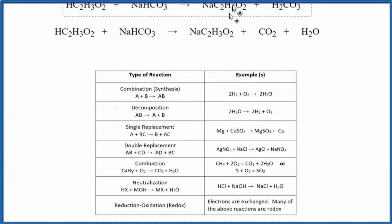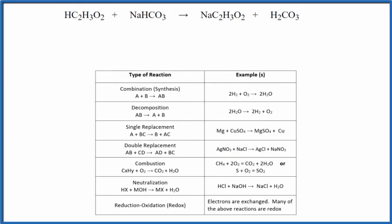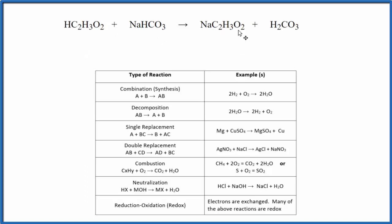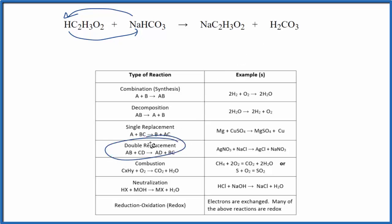We have our acetic acid and our sodium hydrogen carbonate come together, and we end up with sodium acetate and what's called carbonic acid. This is a double displacement reaction — we can see that the H and the Na switch places. The Na is now with the C2H3O2 acetate ion, and the H comes over so that we have H2CO3 in the products. The positive ions have changed places.